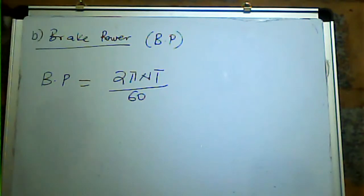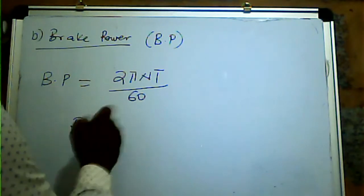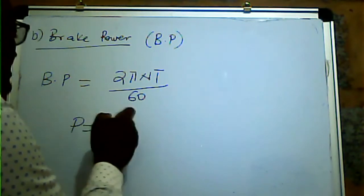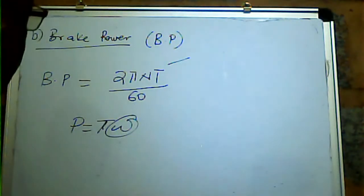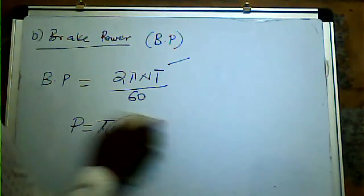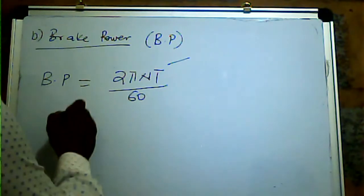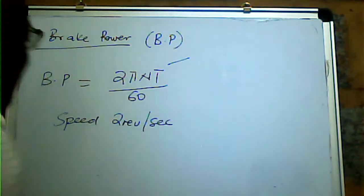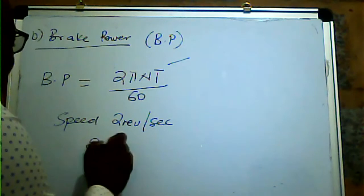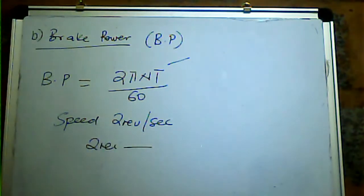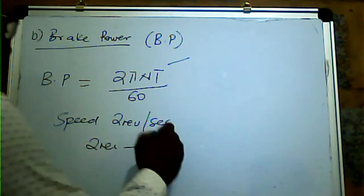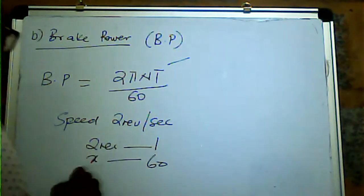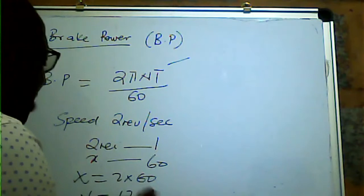Power equals torque multiplied by omega, and 2πN/60 is simply the omega. In this question, what is our N? We are told the speed is 2 revolutions per second. So per minute there are 2 × 60 = 120 revolutions. Our N is 120 RPM. In these calculations the speed should always be in RPM.